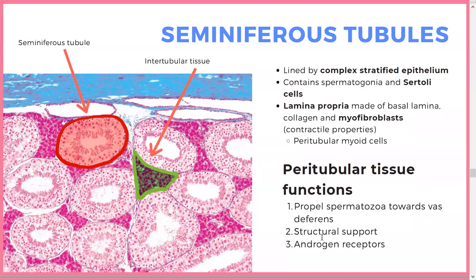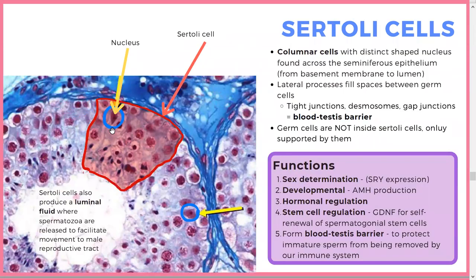The peritubular tissue functions to propel spermatozoa toward the vas deferens — that's why we have the myofibroblasts. They also provide structural support and have androgen receptors. Sperm cells themselves don't have androgen receptors — it's the Sertoli cells that have the receptors that initiate spermatogenesis. Sertoli cells have a large nucleus and are difficult to distinguish individually because of tight junctions, desmosomes, and gap junctions that make them very closely connected.